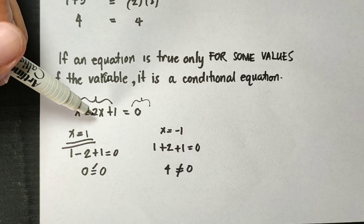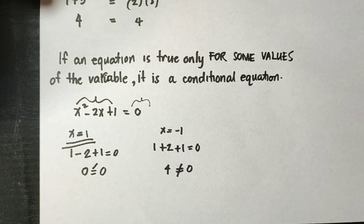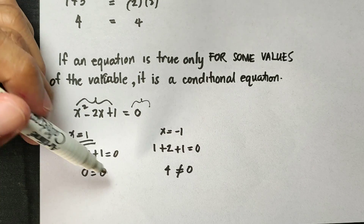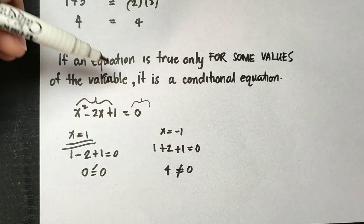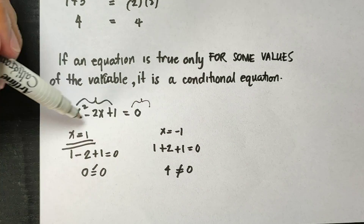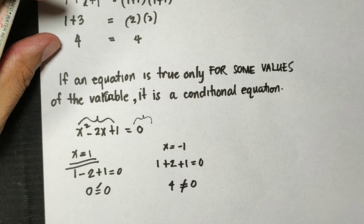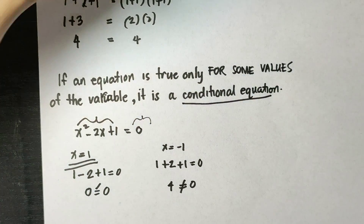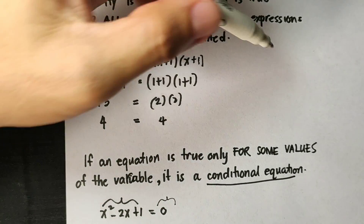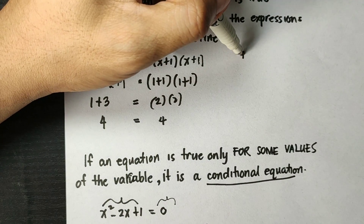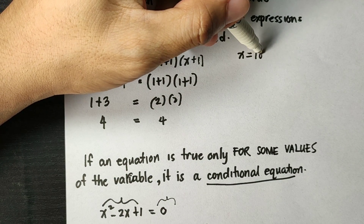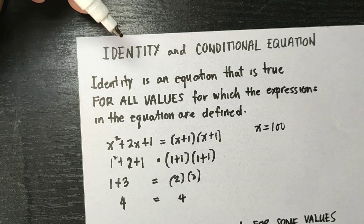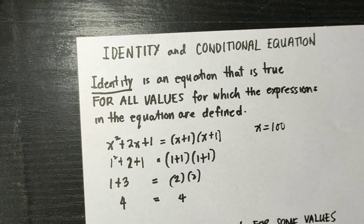Otherwise they will not become equal. When x is 2, when x is 3, when x is negative 7 and so on, they will not become equal — that is what we call a conditional equation. But on the other side, for the identity, when x is 100, when x is 1,000 and so on, they will always be equal.